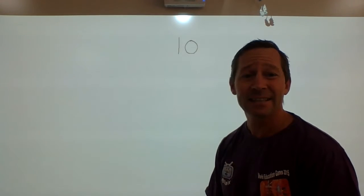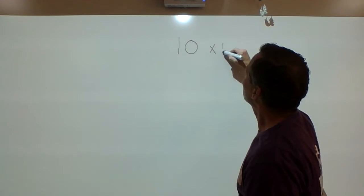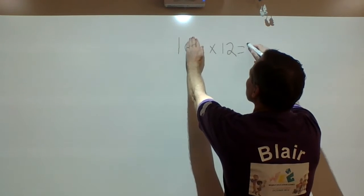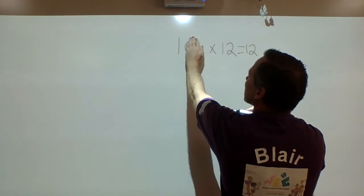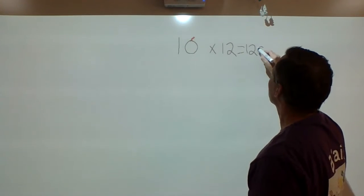12 times 10, let's have a look at that. We've got 10 times 12. We know if we cover up that zero, 1 times 12 is 12. And because we're multiplying it by 10, we add a zero on the end.